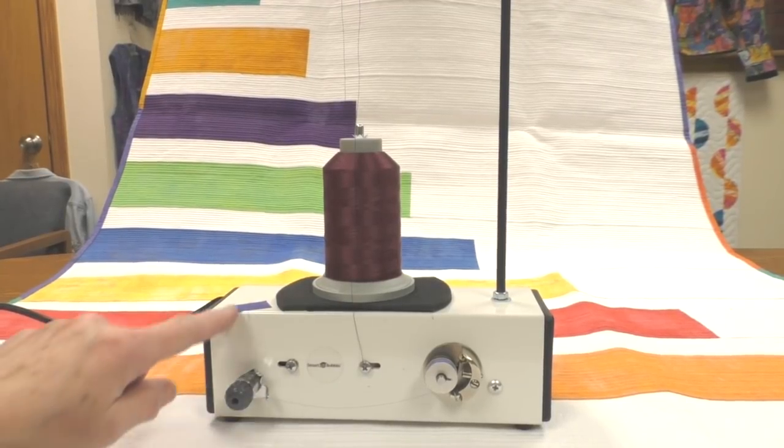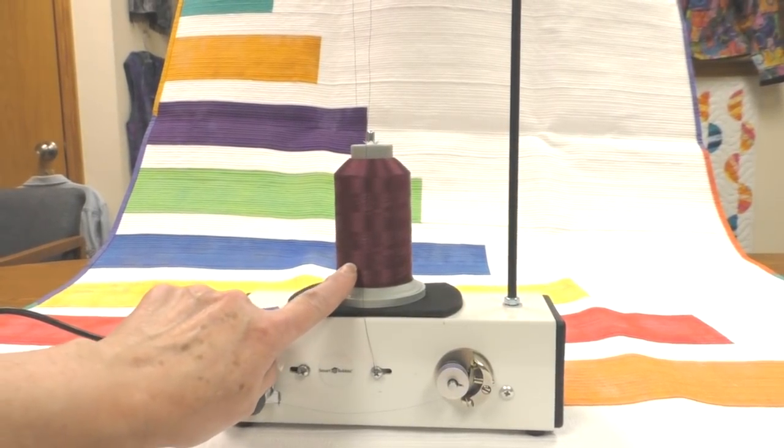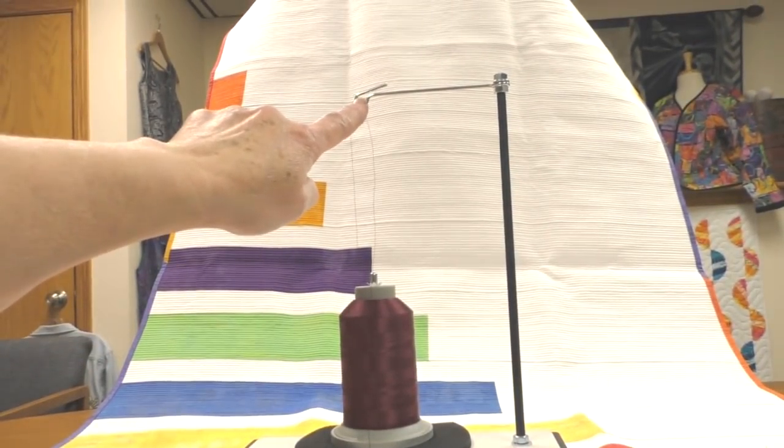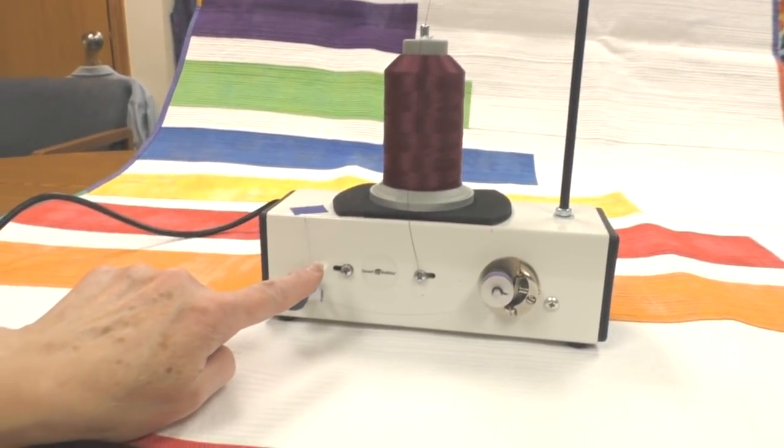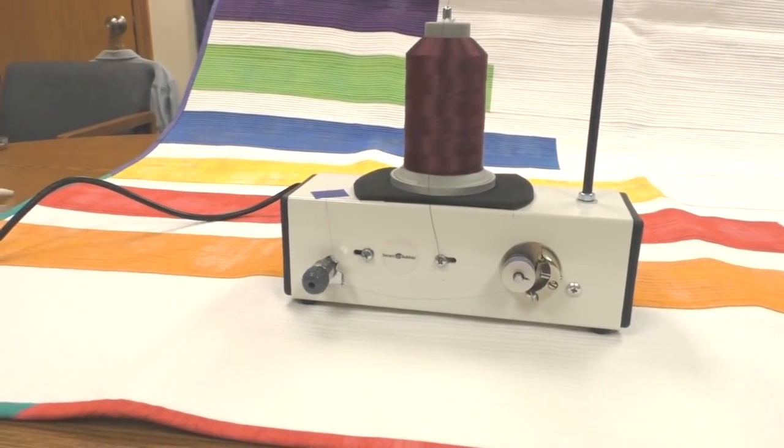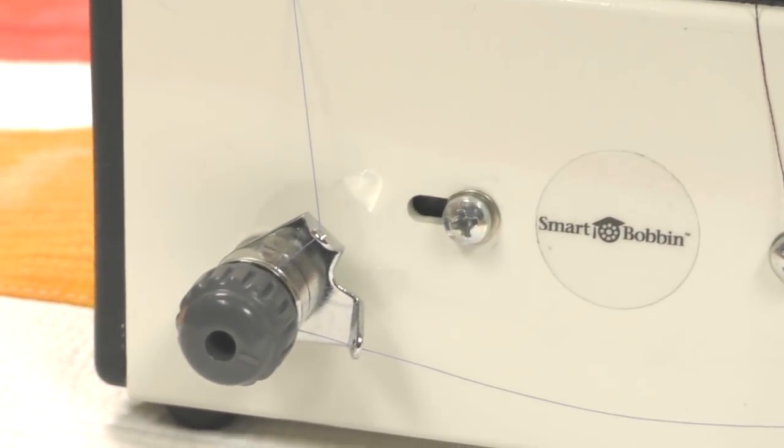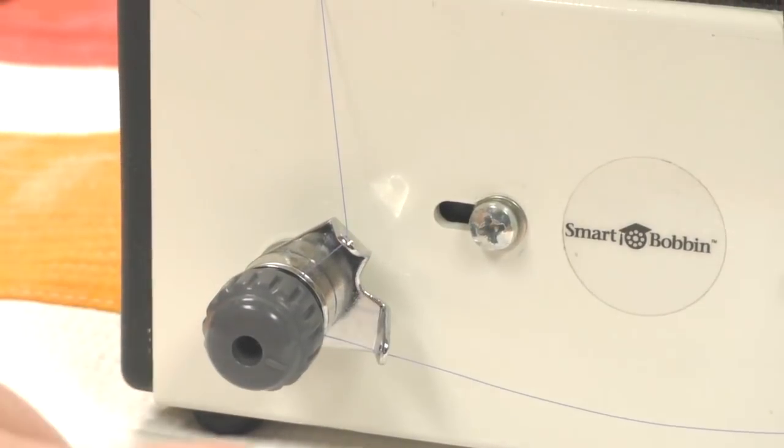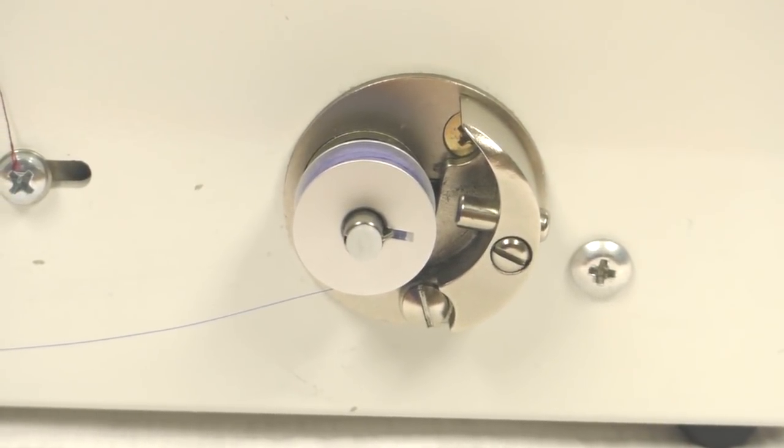Fresh from the factory the thread path will be taped to the turbo winder. The thread is going to come directly from the cone straight up to the guide above the cone. From there it's going to travel right down to the tension assembly. The thread will pass through the top eyelet, through the tension discs, and then out the bottom eyelet before traveling across the winder to the bobbin and the winding mechanism itself.